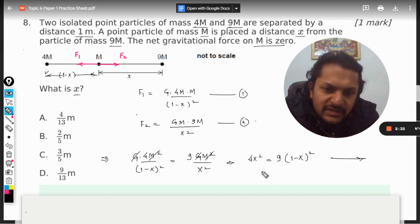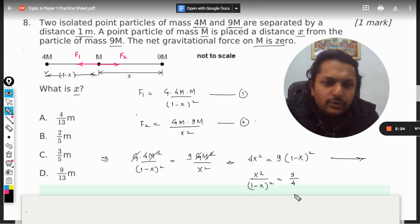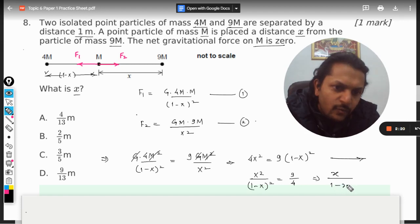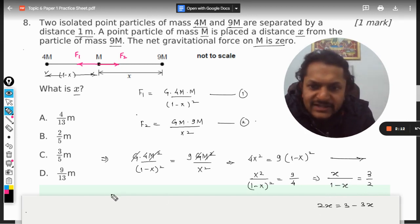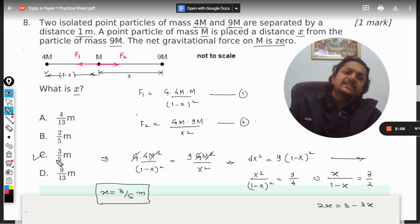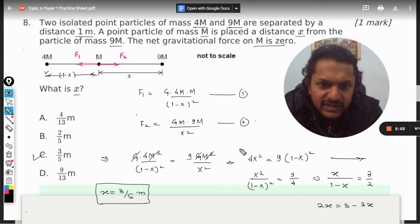But the other method will be if I keep it like this and now I take the square root on both sides, so it will be x divided by (1 minus x) equals 3 by 2. Just solve it: 2x equals 3 minus 3x, so x is coming out to be 3 by 5 meters. So the answer is C.